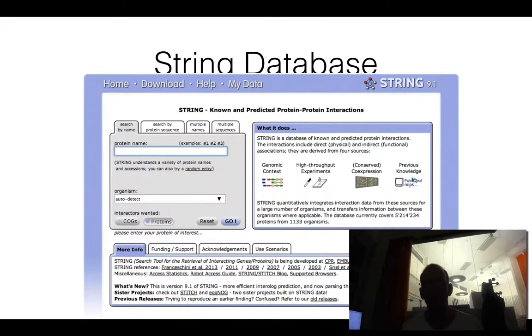But there are also high throughput experimental data. There are co-expression data, which basically means that two proteins that are expressed at the same time—part of the cell cycle, for instance—are more likely to interact with other proteins. And there are also data obtained from previous studies read in other papers that are obtained from STRING and text mining.